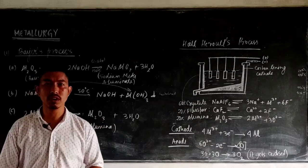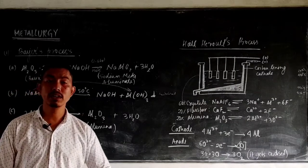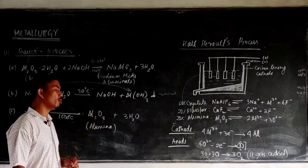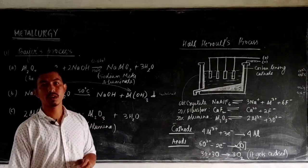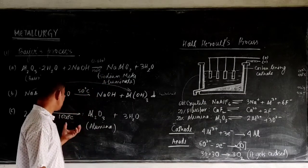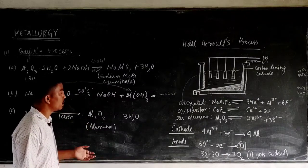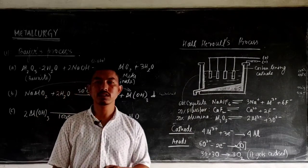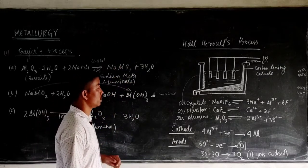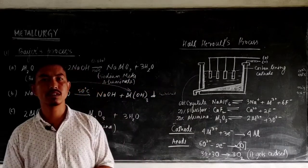The aluminium oxide obtained has a great affinity for oxygen, meaning that using any normal reducing agent the oxygen cannot be removed from aluminium oxide due to this high affinity. In order to obtain aluminium from aluminium oxide, electrolytic reduction is preferred, which is known as the Hall-Héroult's process.